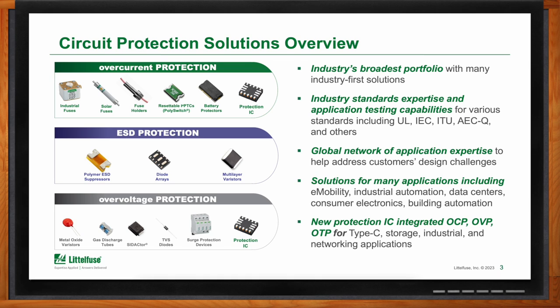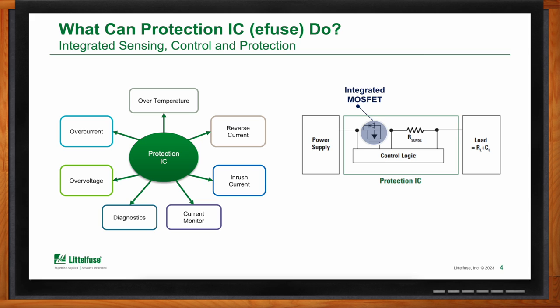At its core, a protection IC provides overcurrent and short circuit protection. At its most basic level, it is a series MOSFET with some sensing circuitry and control logic. What it can protect against and sense includes overcurrent, overtemperature, reverse current protection, inrush current protection, current monitoring, diagnostics, and overvoltage protection — all in a single package.